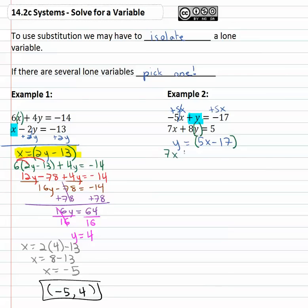The other equation, seven x plus eight y, which is five x minus seventeen equals five. And now we can start solving.